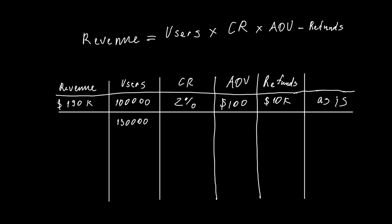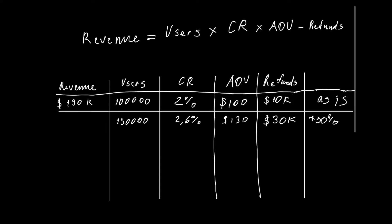So if we got 130k users, 2.6 percent conversion rate, average order value $130 and for instance refunds in this case will be $30k. It means 30 percent increase of each metric and our overall revenue in this case will be $400k.